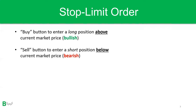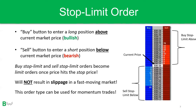Stop limit orders combine both stop and limit orders in one. If you go long with a stop limit order, you enter a long position above the current market price. If you go short, you enter a short position below the current market price. Buy and sell stop limit orders become limit orders once price hits the stop price, so this order will not result in slippage in a fast-moving market. This order can be used for momentum trades and breakouts. On the active ladder, place a buy stop limit above and a sell stop limit below the current market price.